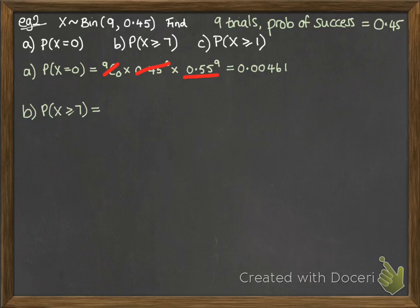And the next one, the probability of x is greater than or equal to 7. Remember these are discrete, so we can only have whole numbers of successes. You can't have 8.4 successes. So the probability of x being greater than or equal to 7 is the same as the probability of x equals 7 plus the probability of x equals 8 plus the probability of x equals 9. So we need to do each of those and add them together.